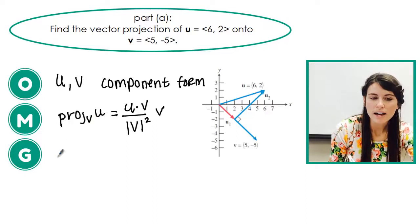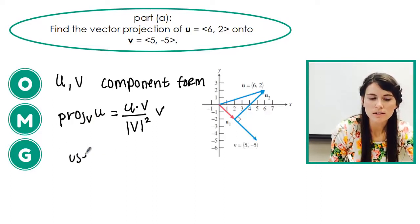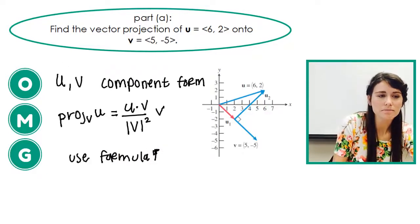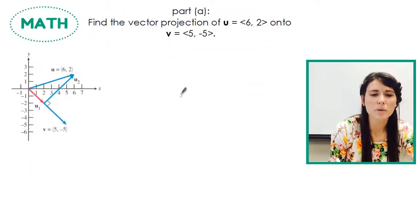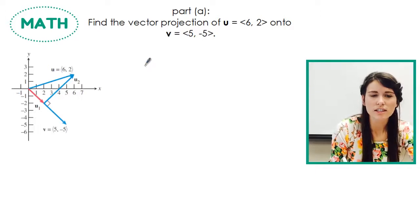Now to do that, I'm going to just use the formula I just wrote down up there. So let's go ahead and do that. So I'm going to take, the first things I need to know is the dot product of u and v.